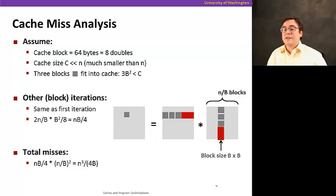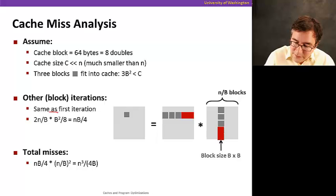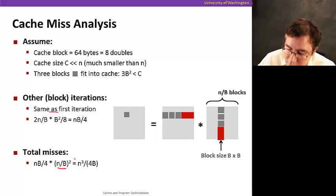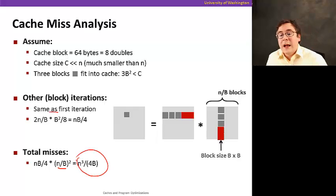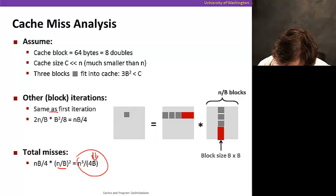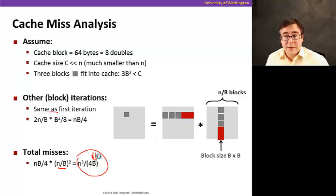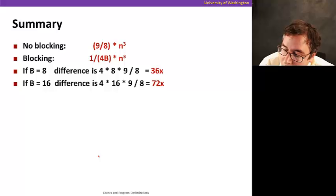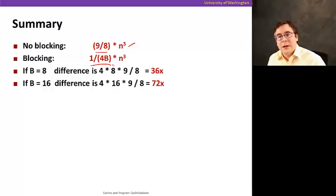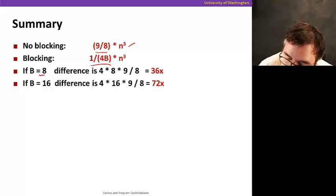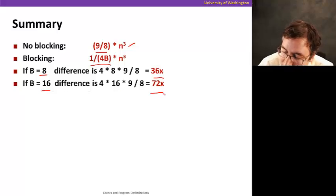For the first iteration the misses are 2n over B times B-squared over 8, which equals nB over 4. Over all iterations we do this n over B squared times, giving a final total cache miss count of n-squared over 4B. Comparing: without blocking it's 9/8 times n-squared misses; with blocking it's 1/(4B) times n-squared misses. If B equals 8, the difference is 36x; if B is 16, it's 72x — really, really big.